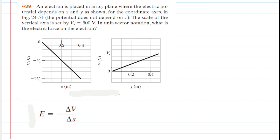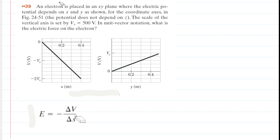Since there is a changing electric potential as we move along the x-axis, and there's a changing potential as we move along the y-axis, the reason for that change in potential is because there's an electric field in this environment. We can calculate that electric field by using the relationship between the electric field and that change in potential. The electric field is going to be the negative change in potential over change in position, and that's what we're going to extract from the graph.